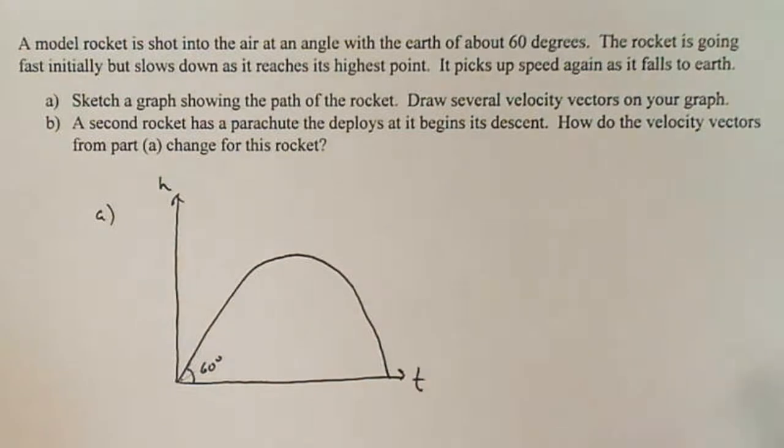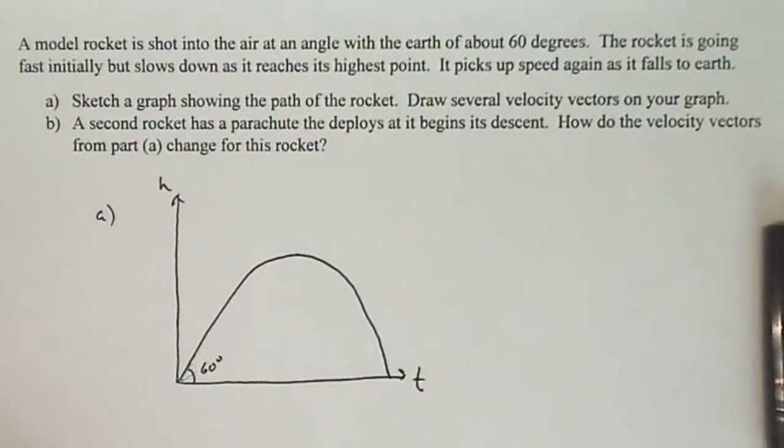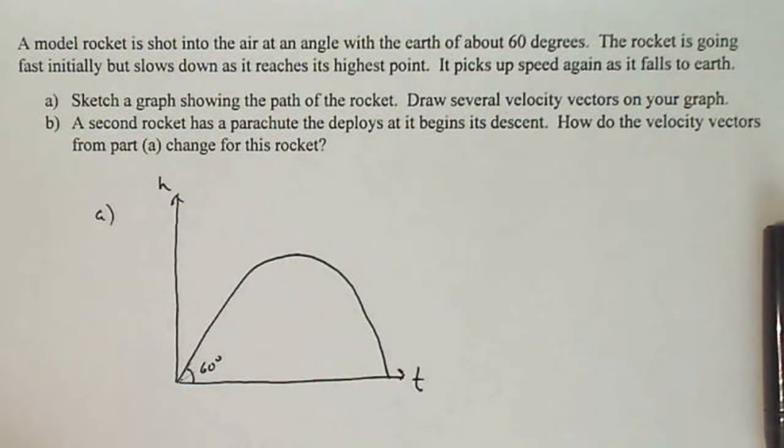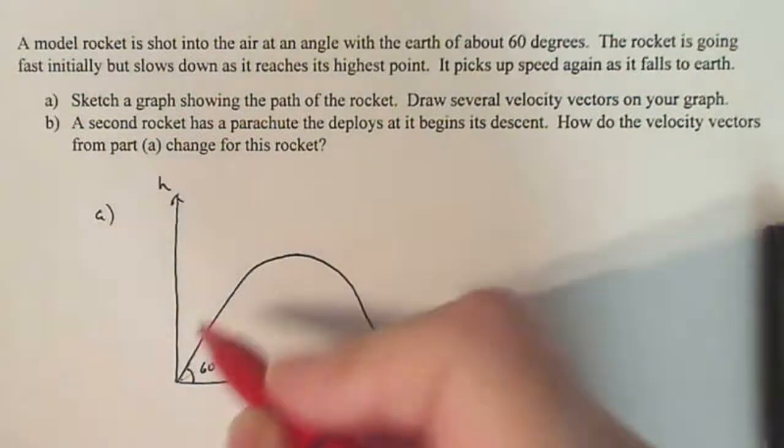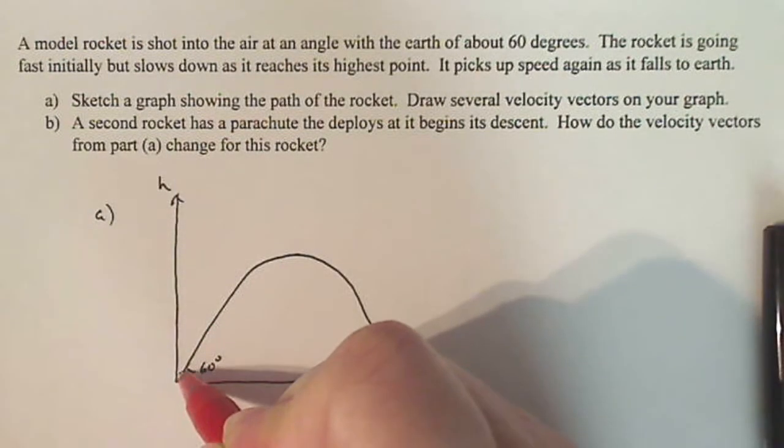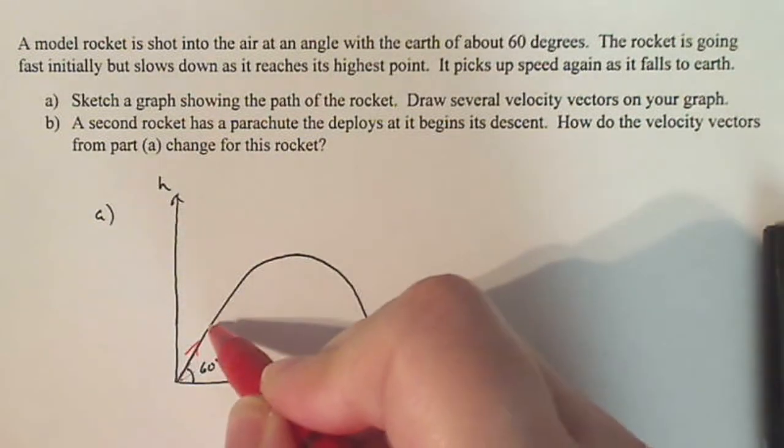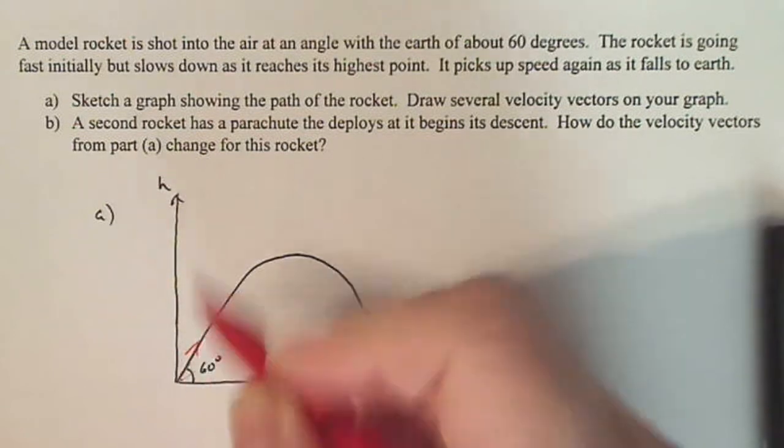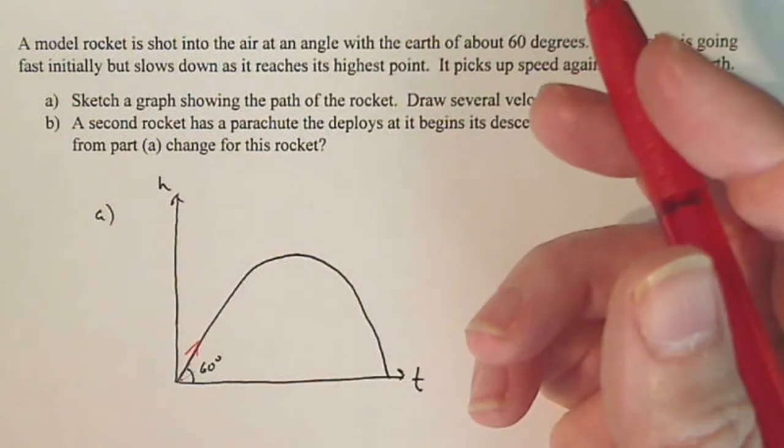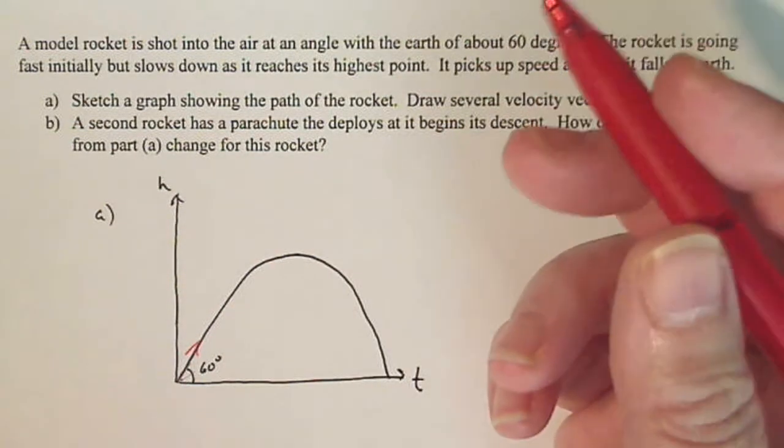Now we want to draw several velocity vectors on your graph. So let me do this in a different color pen. Velocity vectors are vectors that are tangent to position. So if I draw the velocity vector right here, this should have an angle measure of 60 degrees with the horizontal, and the magnitude of the length of each vector should mimic the speed of the object.